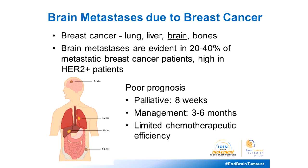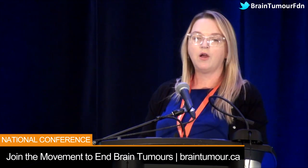We're focused on brain metastases due to breast cancer. Breast cancer is known to metastasize to the lung, liver, brain, and bone. In our lab, we are focused on the brain. Brain metastases are evident in up to 20 to 40% of metastatic breast cancer patients and are especially high in those patients that are HER2-positive.